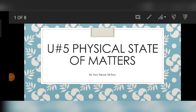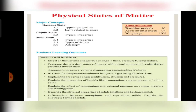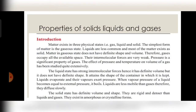Bismillahirrahmanirrahim. Assalamu alaikum, dear students. Today we will discuss Unit 5: Physical States of Matter. What is matter? Everything in the universe is made up of matter, and it has three types: solid, liquid, and gas. In this chapter we will discuss the three states — gaseous, liquid, and solid — and their general properties. The first heading is Introduction, and the subheading is Physical States of Matter.